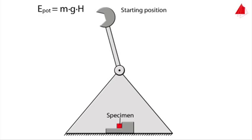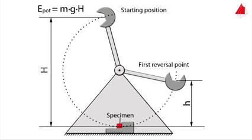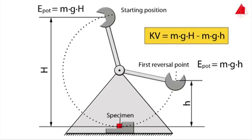Here is the main principle of the measurement. In its starting position, the pendulum only has potential energy. It is given by mass of the hammer, m, times gravitational acceleration, g, times starting height, capital H. After the pendulum has been released, the hammer moves downwards, hits the specimen and then only swings to height, small h. Exactly at the first reversal point, the pendulum again only has potential energy, which is m times g times small h. The energy that has been absorbed by the specimen is called notch impact energy, KV. It corresponds to the difference between the two potential energies.